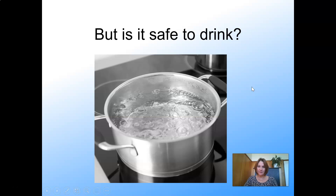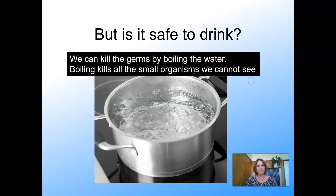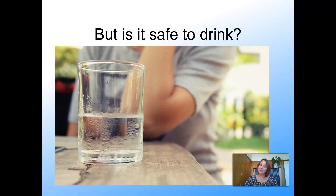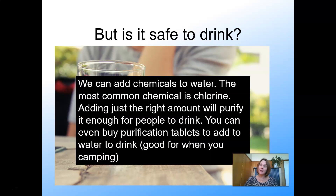We can make it even safer by boiling it. We need to make sure it reaches 100 degrees Celsius, which is the boiling point of water. Boiling kills all the small organisms we cannot see. But we still have to ask ourselves: is it safe to drink? There are other ways of getting rid of tiny microorganisms. We can add chemicals to the water — the most common is chlorine. Adding just the right amount will purify it enough for people to drink. You can even buy purification tablets, especially when you're out camping and filtering water from a river.